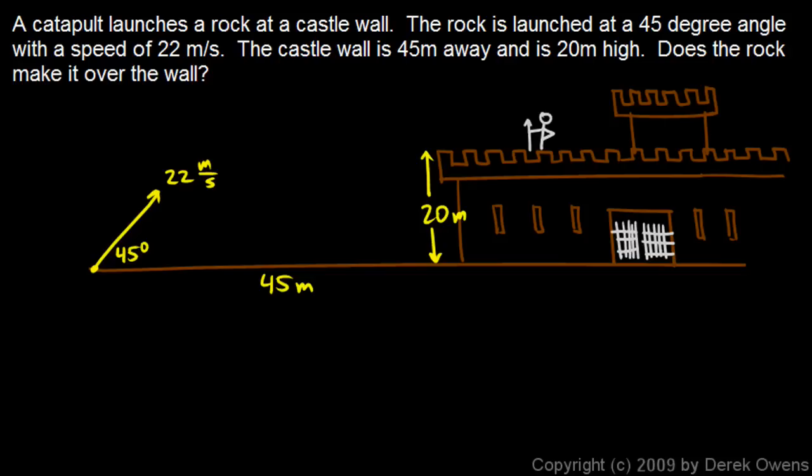So the rock goes sailing along here in this parabolic path, and we don't know how high it goes. Presumably it would go up high enough, but we don't know if at the time it reaches the castle wall, if it's high enough.